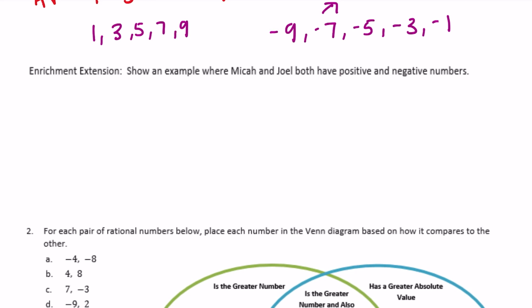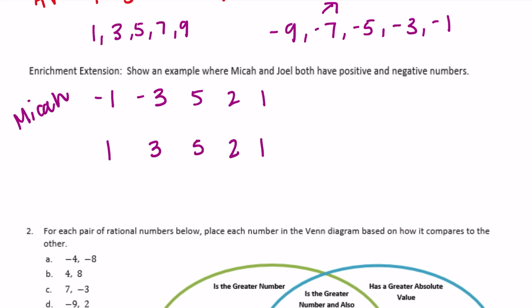So let's do Micah — I'm going to give him both positive and negative numbers. Let's give him negative 1, negative 3, 5, 2, and 1. So the absolute values of those would be 1, 3, 5, 2, and 1. Joel needs to have different numbers but the same absolute values: 1, 3, 5, 2, and 1.